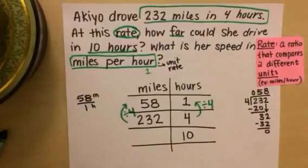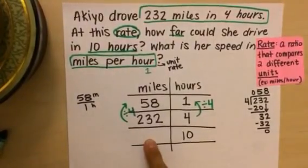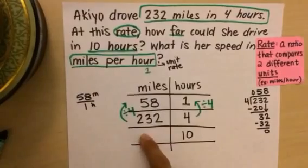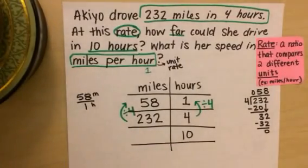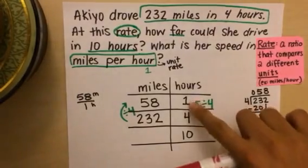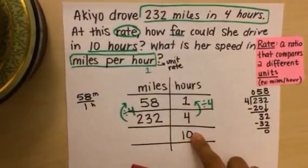So now instead of setting up a proportion, I can actually use my unit rate to solve for this last missing piece of information, right? So I'm going to switch colors so that it's easier to see what I'm doing. And I'm going to use my unit rate. Look for a pattern with multiplication and division.